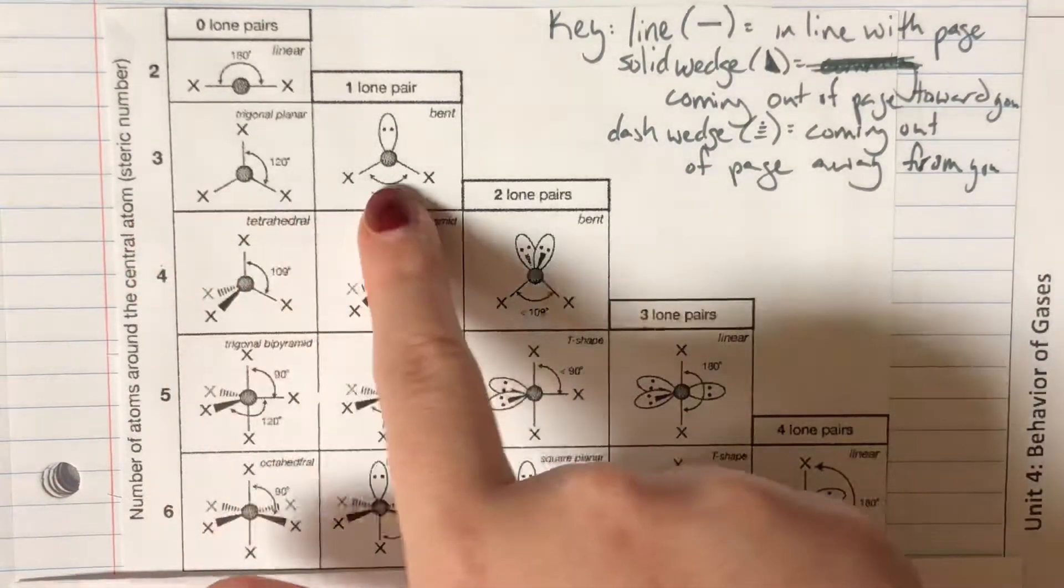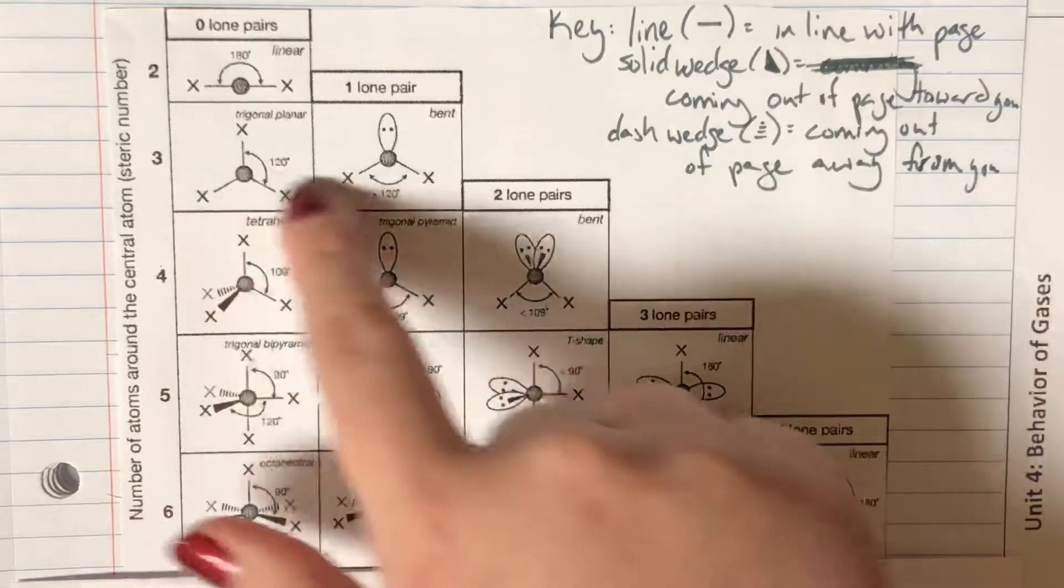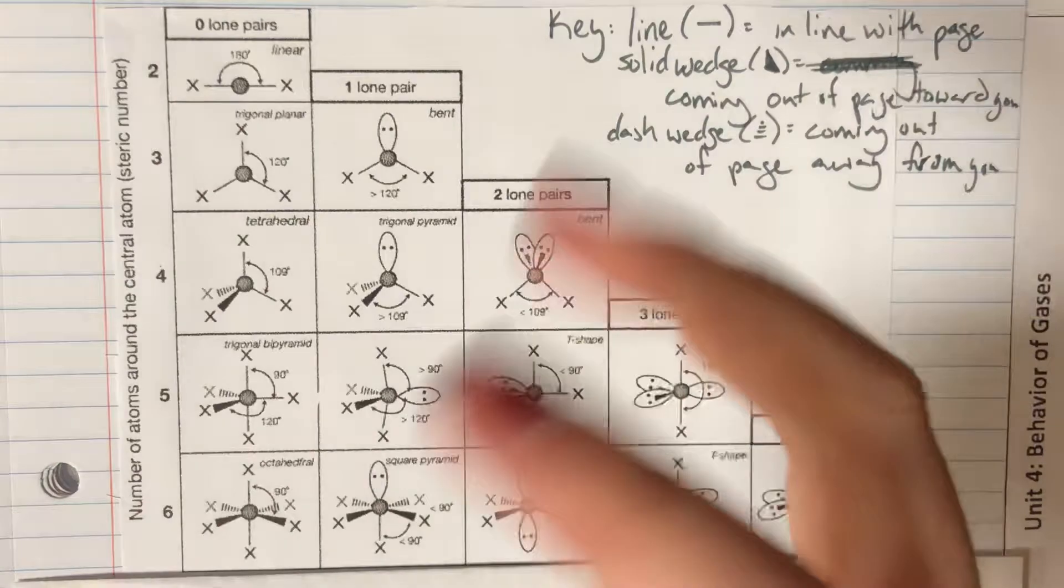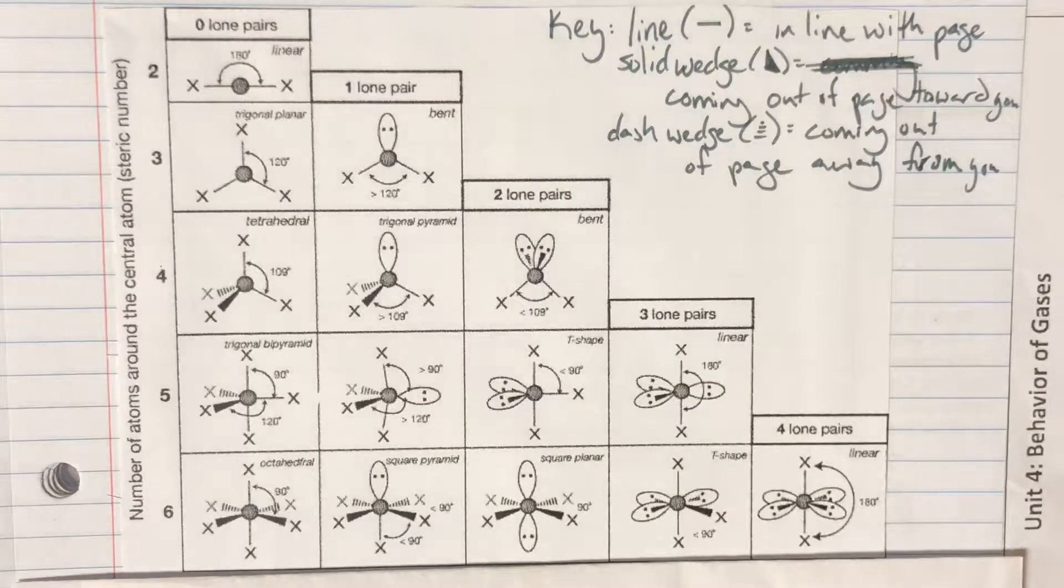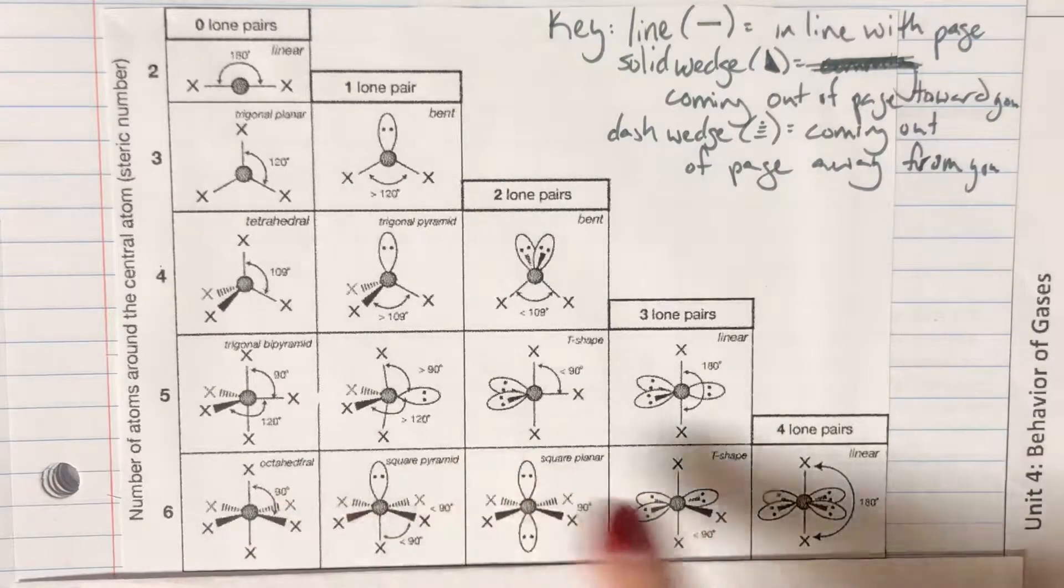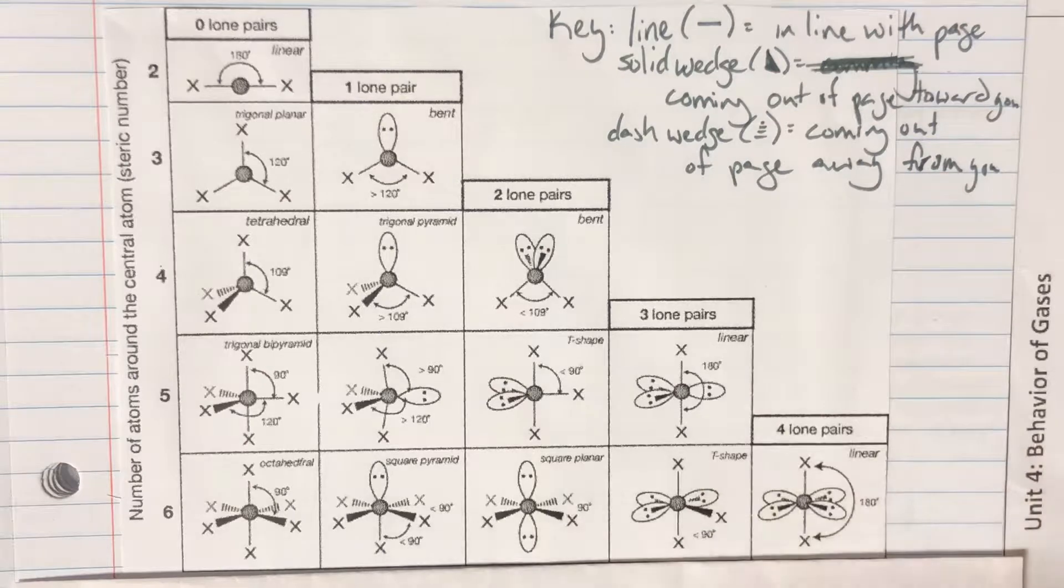Three is going to be steric number three. You can either have atoms around the central atom or a lone pair is going to count toward your steric number as well. Four, five, six. You have a bunch of different options for what this can look like depending on how many lone pairs you have and how many atoms you have around the central atom.